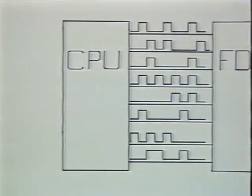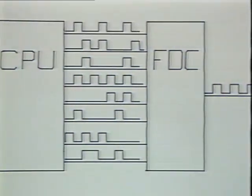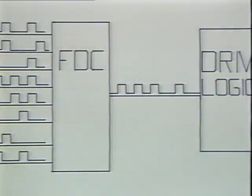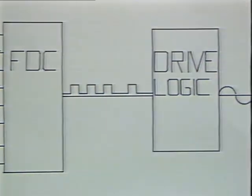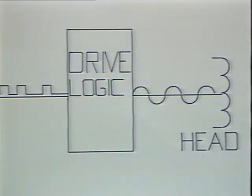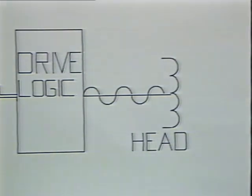Before discussing the actual alignment procedures, let's look at the way a floppy drive stores and retrieves data. The computer's central processing unit produces data in bytes — eight bits of binary data at the same time. The CPU sends this data to the FDC, or floppy disk controller IC, which encodes it into a specifically timed train of serial pulses. The timing relationship of each pulse to the next indicates its logic level. The serial data now goes to the floppy drive logic board, which converts the digital pulses into switching analog current. This current drives two halves of a center-tapped read-write head.